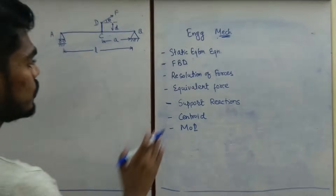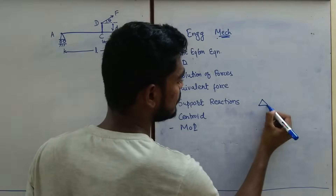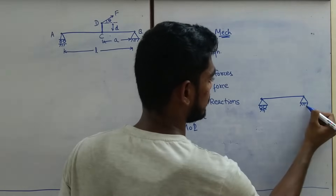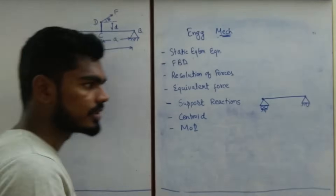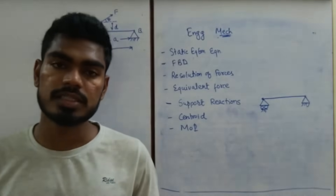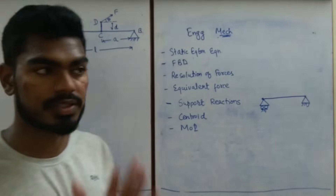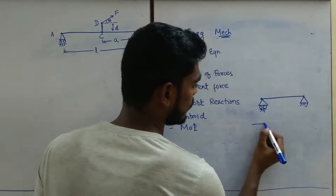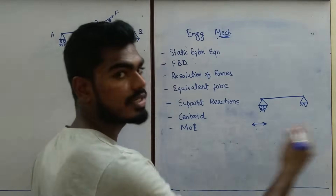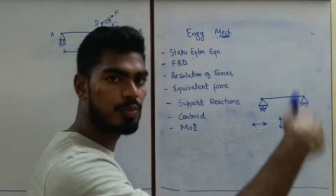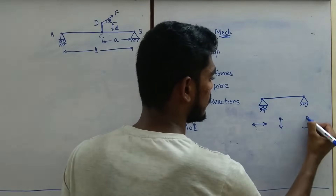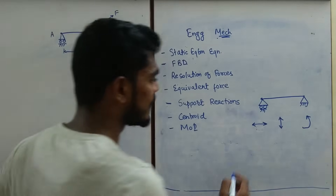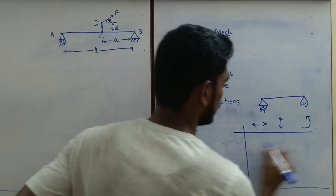To solve support reactions, we need to understand that in Solid Mechanics there can be a roller-type support or a pin-type support. The reaction will come only in the direction where motion is restricted. The possible motions in two dimensions are: horizontal rectilinear motion, vertical rectilinear motion, and rotational motion — which can be clockwise or anticlockwise. These are the possible motions in a two-dimensional system. We will now analyze the roller and pin supports.